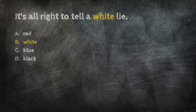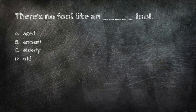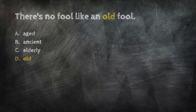"It's alright to tell a ___ lie." Answer: It's alright to tell a white lie — actually, it's not right to tell any lie, white or any other color. Next: "There's no fool like an ___ fool." Options: aged, ancient, elderly, old. Answer: There's no fool like an old fool.